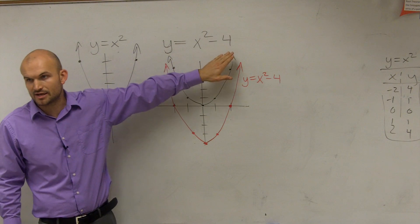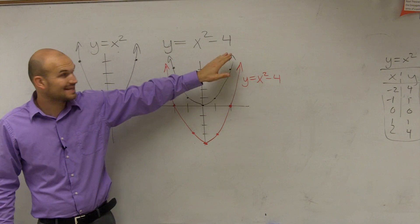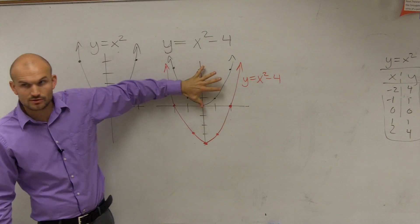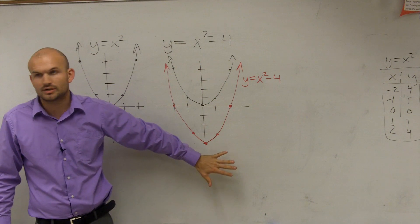Do you see? All I did is this is my negative 4. Remember, this tells you to shift the graph down 4. So all I did was I took this graph and I just moved it down 4 units. That's all I did.